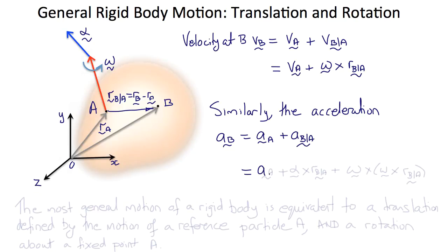This is A sub A plus alpha cross R of B relative to A plus omega cross omega cross R of B relative to A.